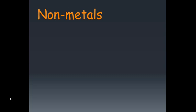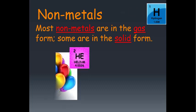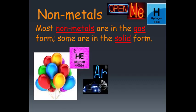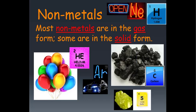If we're talking about non-metals, we note that most of the non-metals are actually in the gas form. They're gaseous. So we've got hydrogen, helium, neon, argon. Those types of substances are gases. But some, like carbon and sulfur, are in the solid form. So they're gaseous and solid.